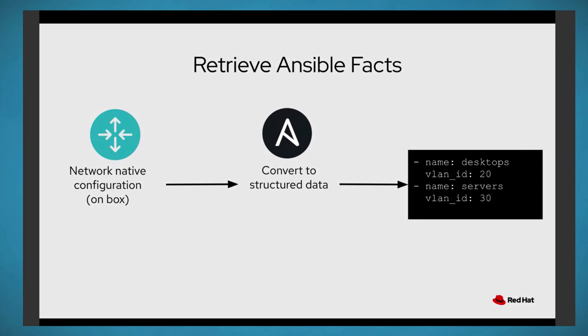I'm going to talk about our new modules called resource modules. Every module created by the Ansible team, or with our partners, has the ability to convert brownfield existing configuration into structured data. So if there's native network configuration on a Cisco box, we convert that to structured data module by module into a succinct, easy data model. For example, I'm grabbing the VLANs off a Cisco router and it has two VLANs: 20 for desktops and 30 for servers. This is a really easy way to convert your existing running configuration on a box that might not even have an API into structured data right away.